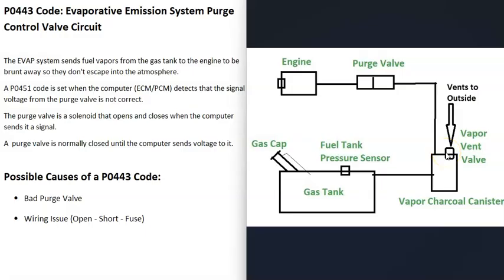The vent valve does different things — the computer can control it to test the system: it can close the valve and see if it holds pressure. A hose then leaves the charcoal canister and goes up into the engine compartment to what's called a purge valve. The purge valve stays closed when the engine's not running so all the gas vapors don't escape. When the engine's running at the right time, the computer sends it a signal to open.